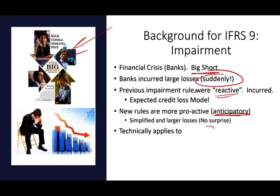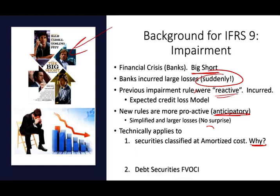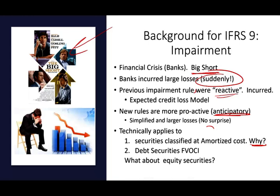These rules technically apply to securities classified at amortized cost — basically bonds or debt investments, when you lend money out or when you buy investments. Equity investments generally go through the income statement, so there's no need to worry about this. Debt securities held at fair value through OCI — the impairment rules would apply to those as well.